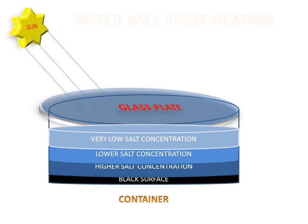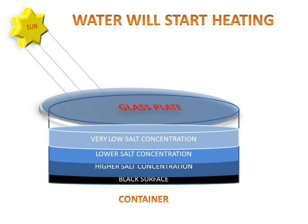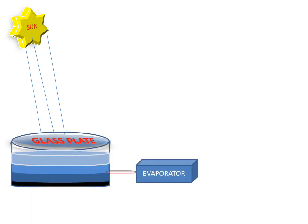Now we see that the water will start heating. This solar pond is connected to an evaporator. The hot water is used in the evaporator for boiling purpose, and the steam generated by the evaporator is used in the turbine for electricity generation.